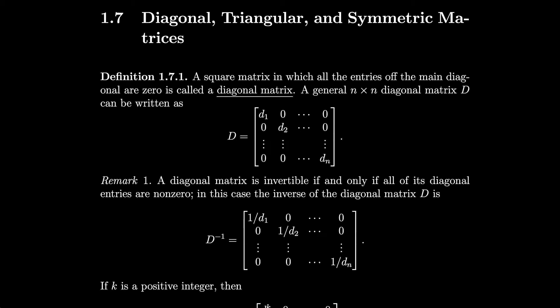Section 1.7: Diagonal, Triangular, and Symmetric Matrices. A square matrix in which all the entries off the main diagonal are zero is called a diagonal matrix. A general n by n diagonal matrix D can be written as follows. A diagonal matrix is invertible if and only if all its diagonal entries are non-zero.